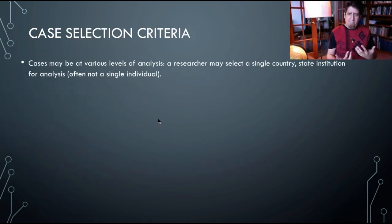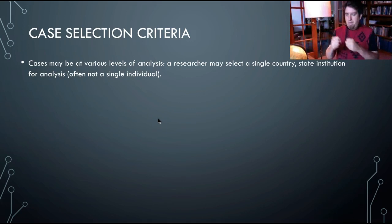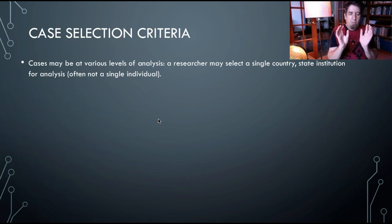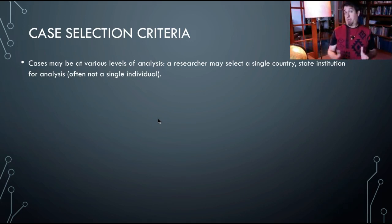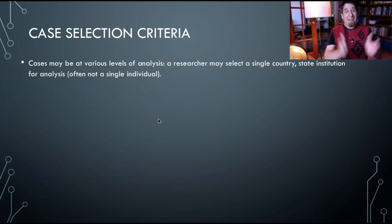You can select cases for various reasons, and the case can be at different levels of analysis. You can select a country, an institution, a community, a people, or a particular gang if you're looking at gang life. Generally, you're not going to select a single individual because this is not psychological research. If it were psychological research, you might select somebody that typified a particular form of abnormal psychology. But in sociology, you're going to select something at a more aggregated level of analysis.